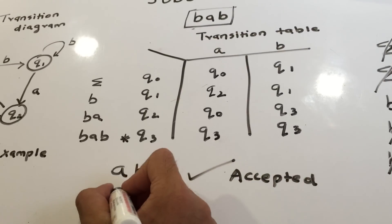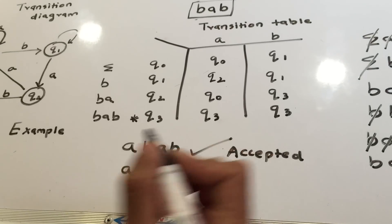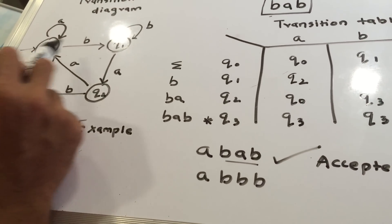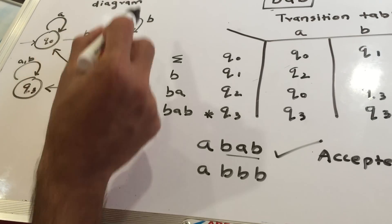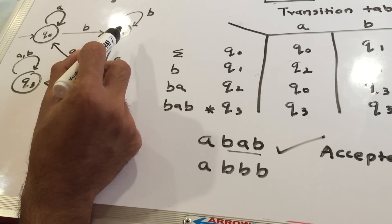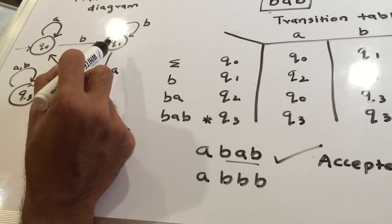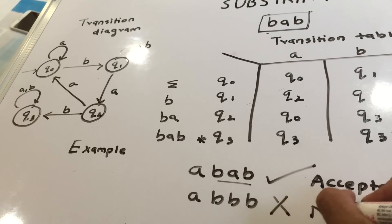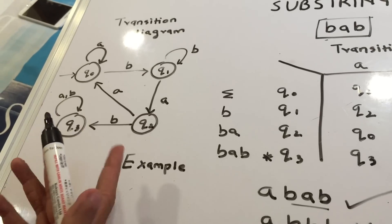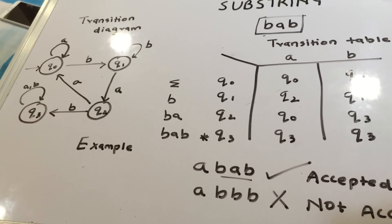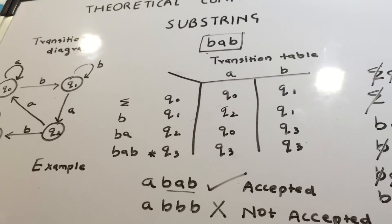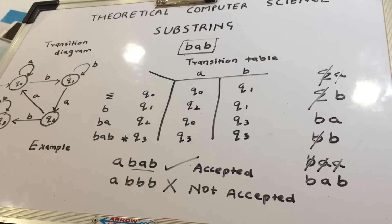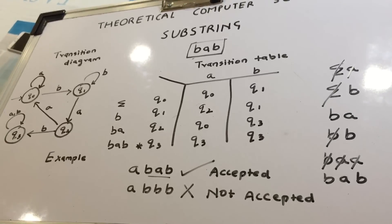Let's try another example: 'ABBB'. Starting at q0: get 'a' → stay q0; get 'b' → go to q1; get 'b' → stay q1; get 'b' → stay q1. After processing the string I'm still in q1, not q3, so this string will not be accepted. Our DFA is correct. This is basically the substring example for deterministic finite automata. Thank you guys — please have a look at the other videos and comment for any topics you want us to cover.